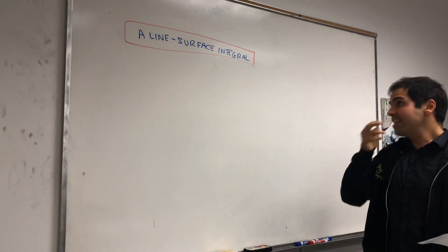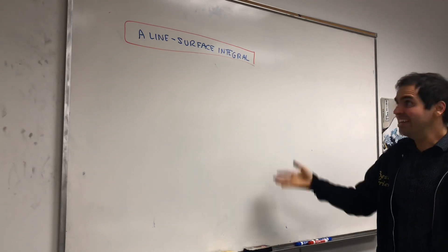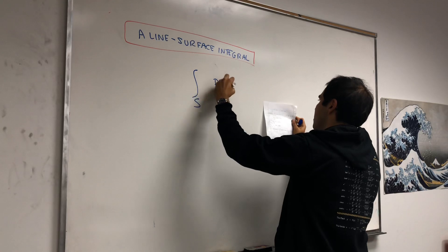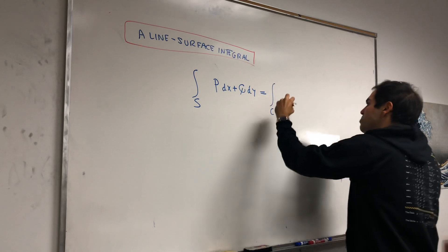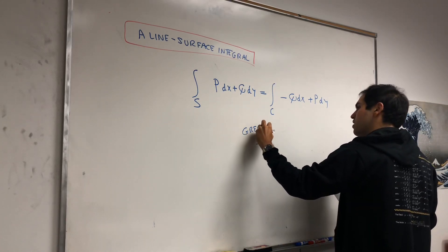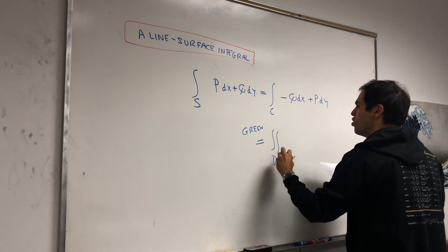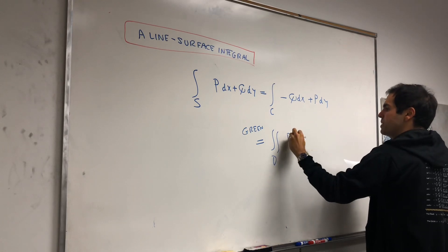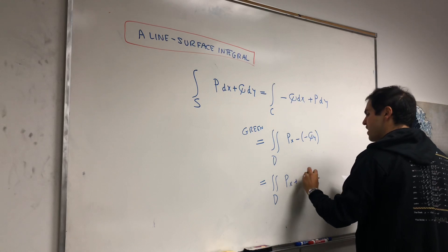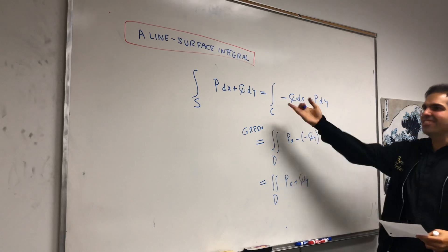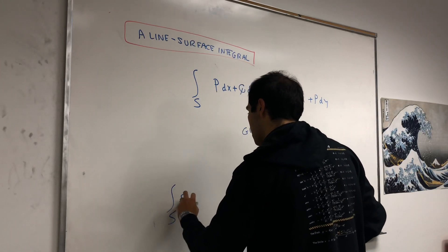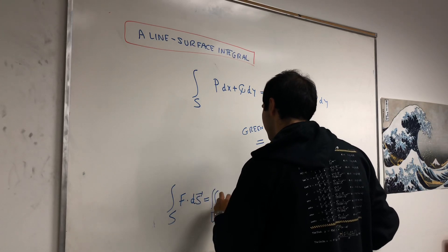Is there an analog of the divergence theorem for one dimension? Indeed there is — it's just Green's theorem. The surface integral of P dx + Q dy is defined to be the line integral of -Q dx + P dy. Applying Green's theorem gives the double integral over D of P_x - (-Q_y), which becomes the double integral over D of P_x + Q_y. So the surface integral of F equals the double integral of the divergence of F, i.e., F·dS equals the double integral over D of div(F), if you define it appropriately.